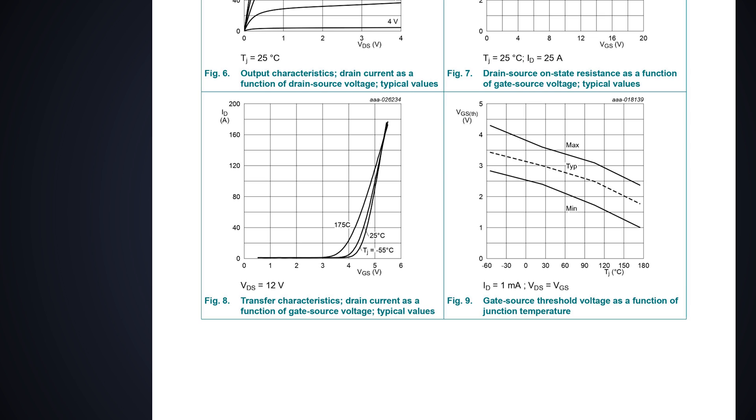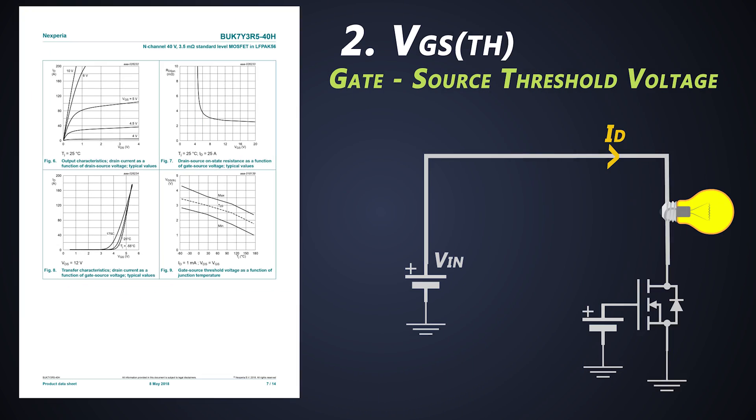If we see this graph, which is known as transfer characteristics of a MOSFET, it shows the theoretical relation between drain current and VGS. Let's say a load is 50 amperes. For that, we need around 4.5V of VGS to turn on the MOSFET, provided the VDS is 12V. Again it is the theoretical relation between VGS and drain current.